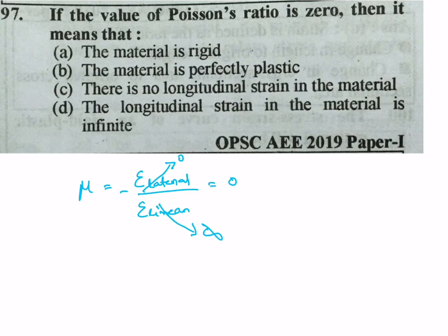From the options: the material is rigid; the material is perfectly plastic; there is no longitudinal strain; or the longitudinal strain in the material is infinite. D is the correct answer — longitudinal strain (linear strain) is infinite, which gives μ equal to zero.